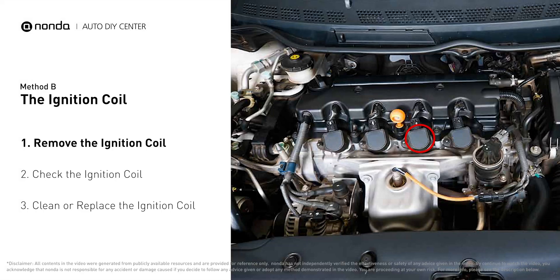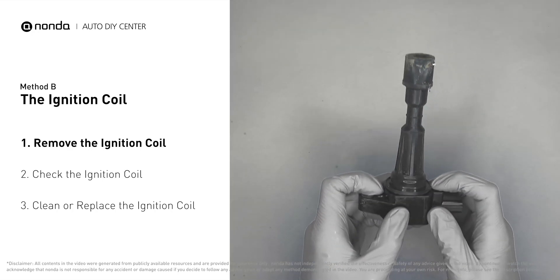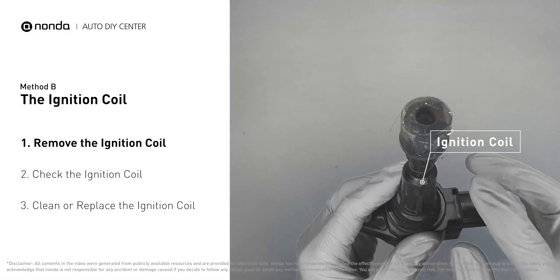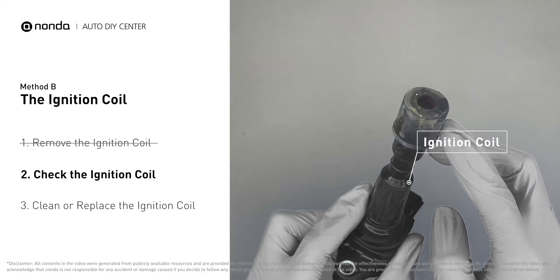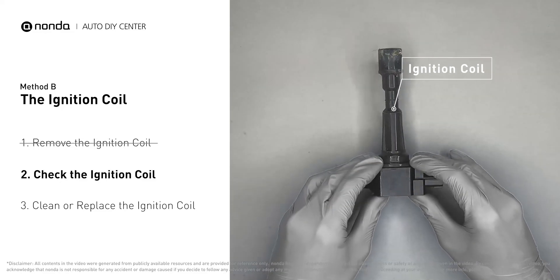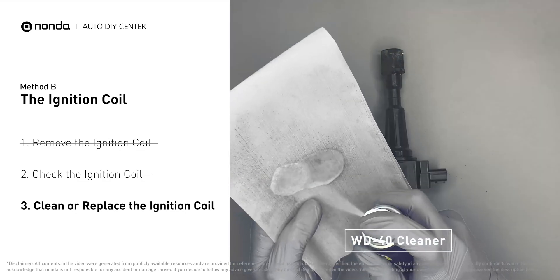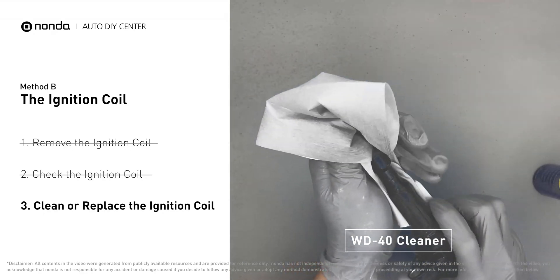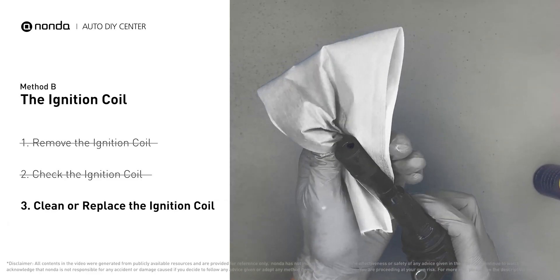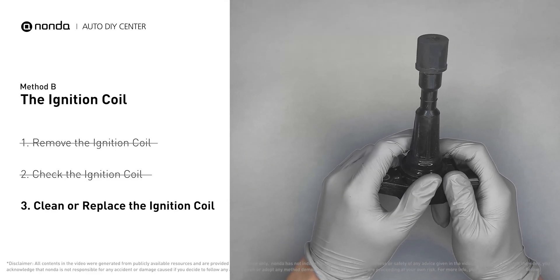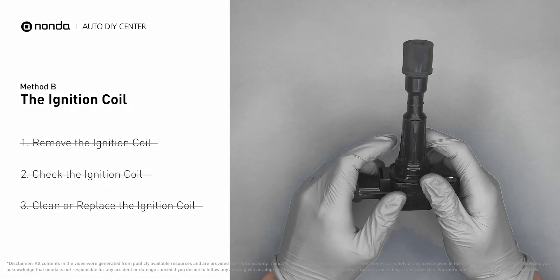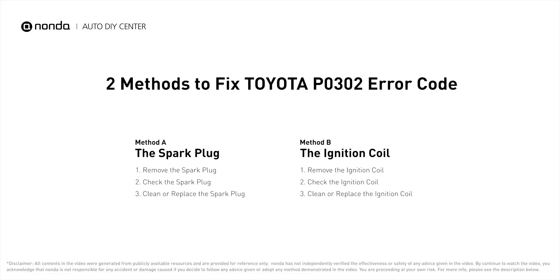Method B: the ignition coil. Ignition coils are usually installed directly at the cylinder head above the spark plug. First, carefully remove the ignition coil from the engine. Check to see if the ignition coil is either stained or damaged. If the ignition coil is covered with engine oil or stains, simply clean it with a WD-40 cleaner. Otherwise, replace the damaged ignition coil with a new one.